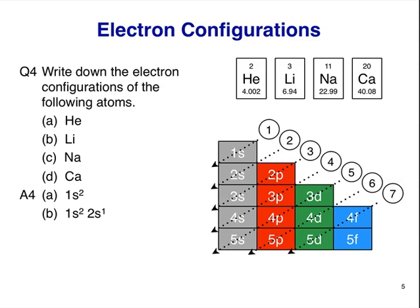Sodium has 11 electrons. Following the same ideas as before, we must fill the 1s orbital with two electrons, the 2s orbital with two electrons, then the 2p orbital with six electrons. Did you remember there are three p orbitals? So far, that's 10 electrons. The 11th must go into the 3s orbital, and the electron configuration is 1s2, 2s2, 2p6, 3s1.